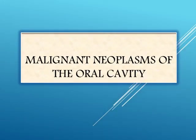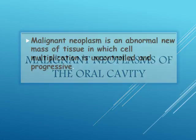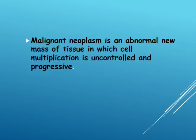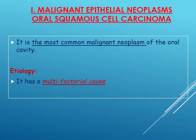Malignant neoplasms of the oral cavity. A malignant neoplasm by definition is an abnormal new mass of tissue in which cell multiplication is uncontrolled and progressive. Malignant neoplasms, according to their origin, are divided into epithelial neoplasms and mesenchymal neoplasms.